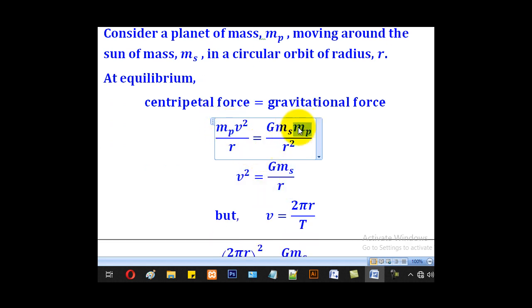mP, the mass of the planet, is on both sides so we shall cancel it out. When you cancel it out, also this r, one r will cancel this side, so that we remain with v squared equal to GmS over r.